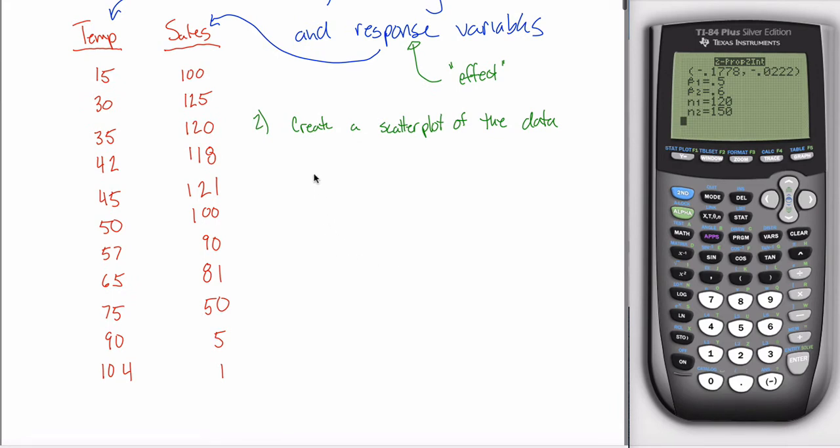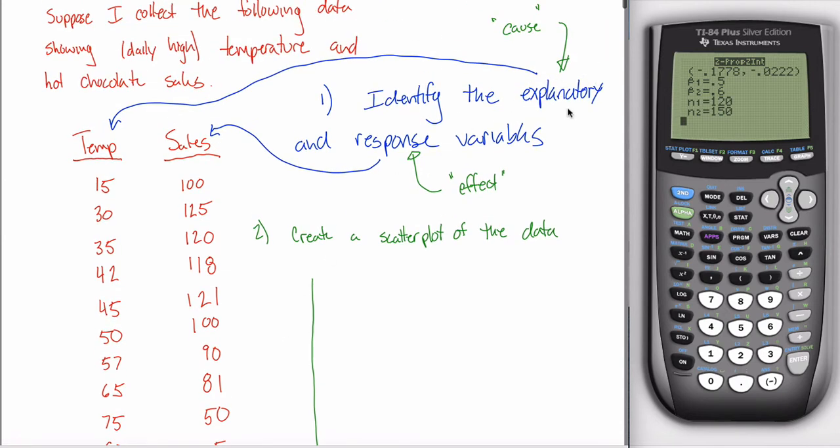And the way you make a scatter plot of the data? Well, a scatter plot is a two-dimensional graph. So you always need an x-axis and a y-axis. The x-axis is this horizontal one here, the y-axis is the vertical one. And importantly, you're always going to put your explanatory variable on your x-axis.